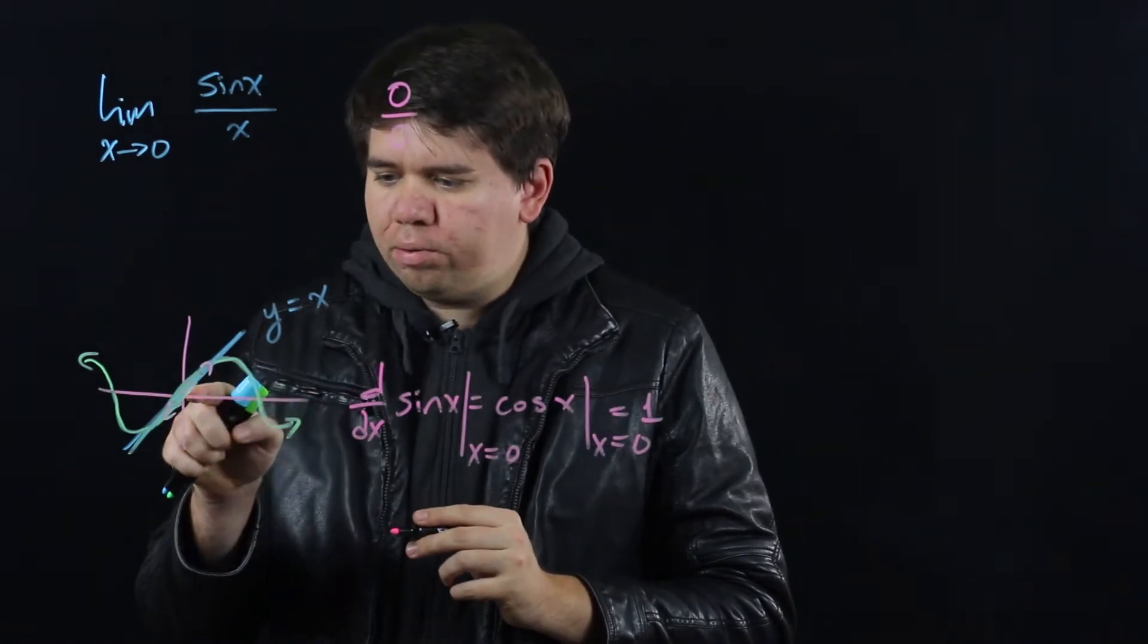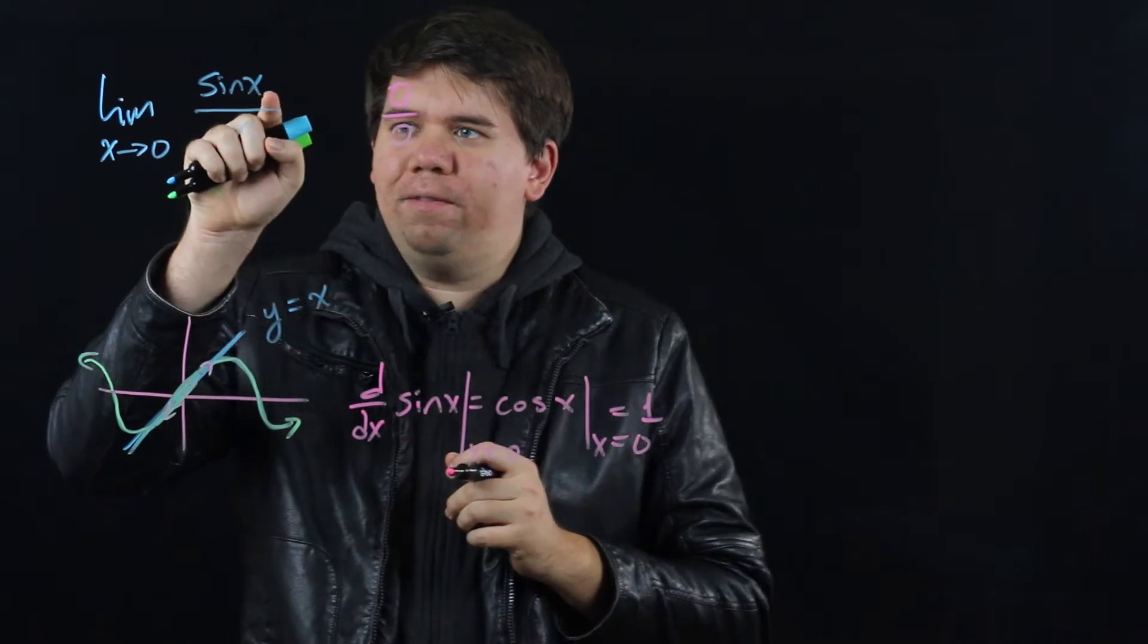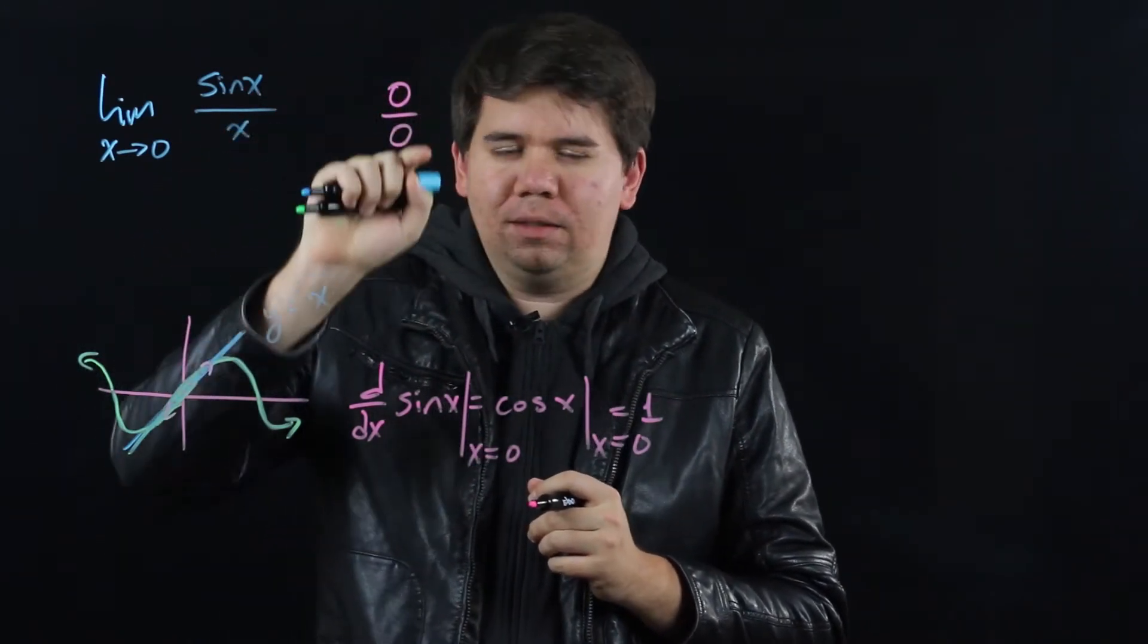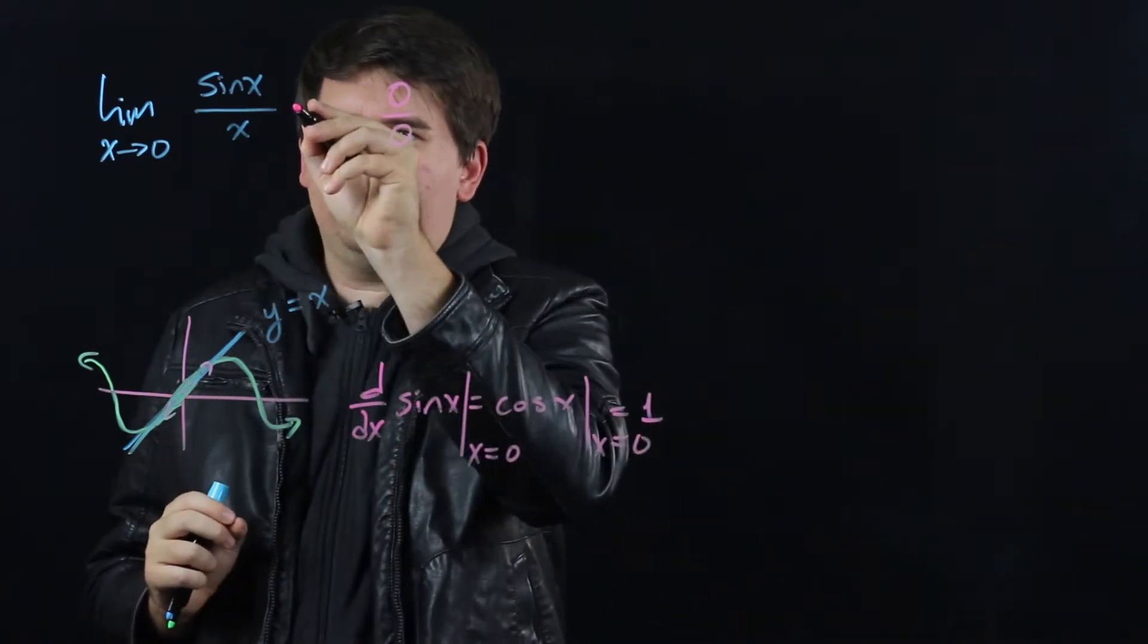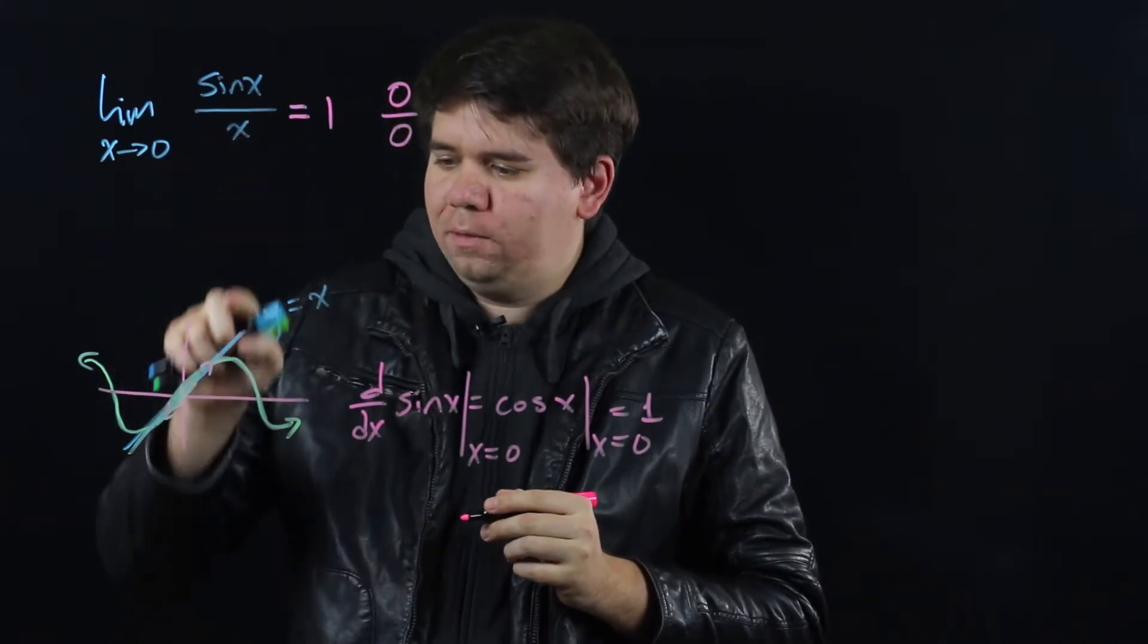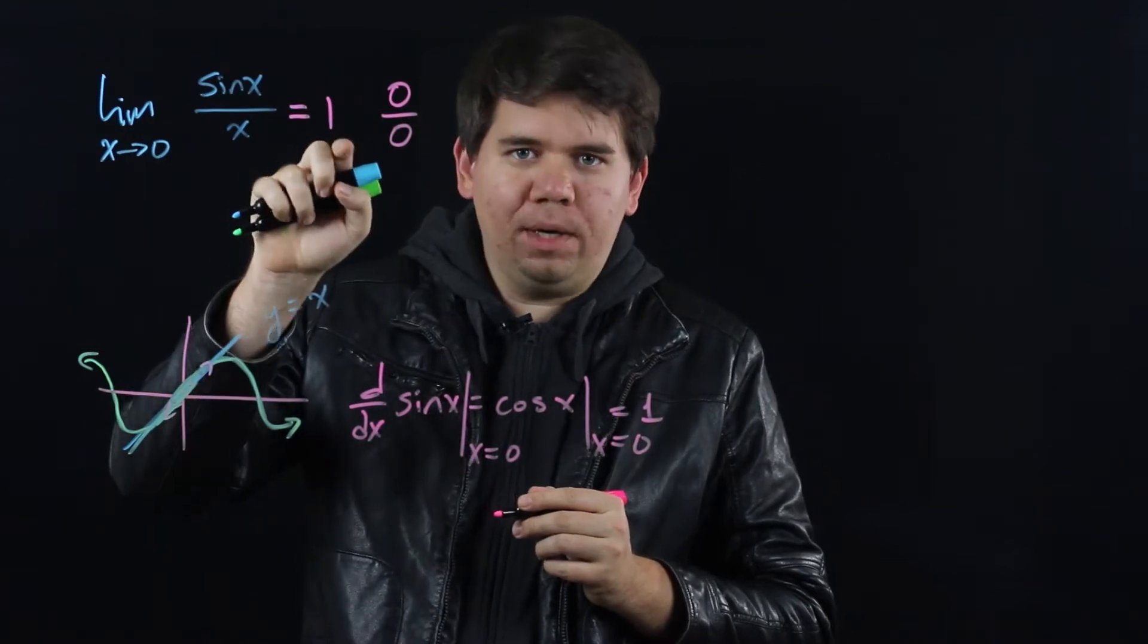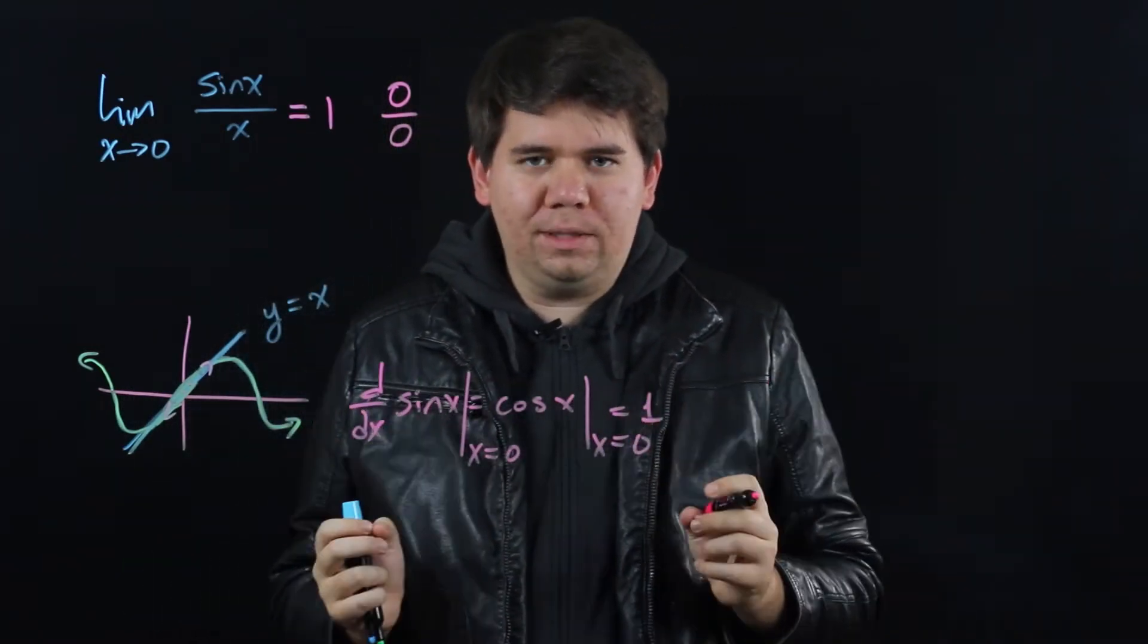Which suggests that they're both approaching 0 at the same speed. That sine of x is coming into 0 at the same rate that x is coming to 0. So this should suggest that this ratio will just be 1. The sine of x is just acting like x, so sine of x over x near 0 comes to be 1.